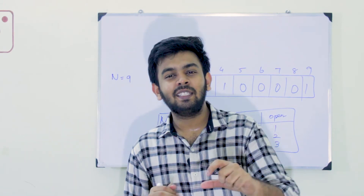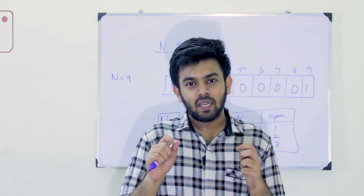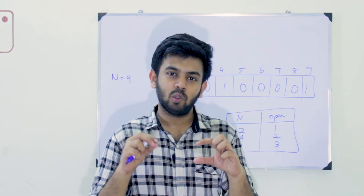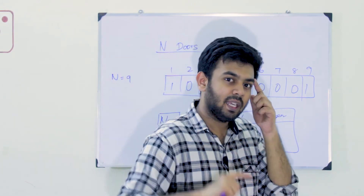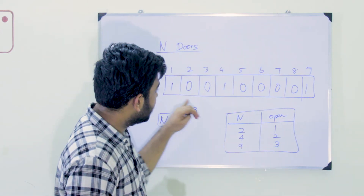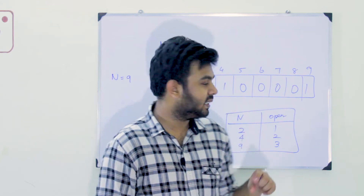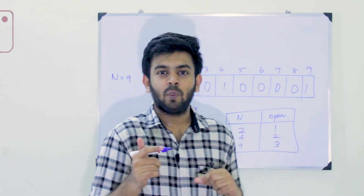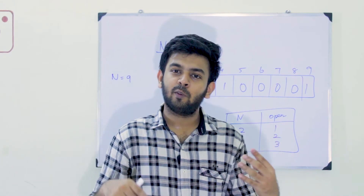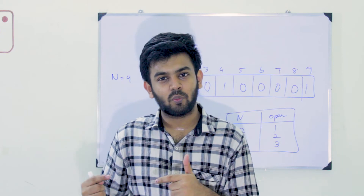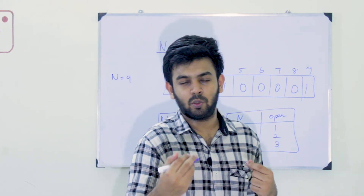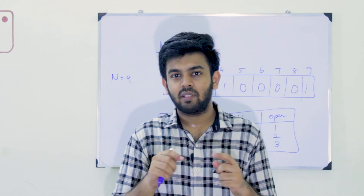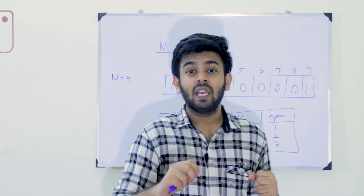So you can solve this question in constant time. The number of open doors is the integer value of the square root of N. We know that doors are open at perfect squares. There is also a second version of this question: instead of returning the number of doors open, check if a specific door is open or closed.